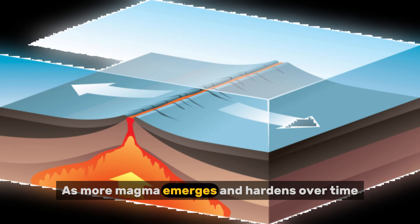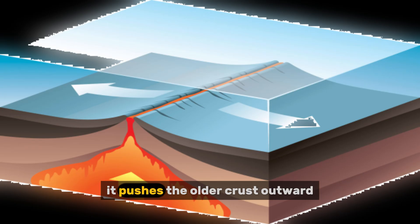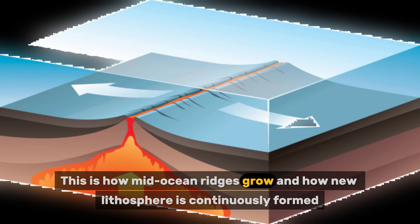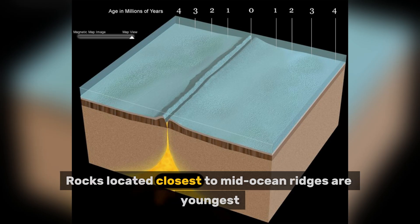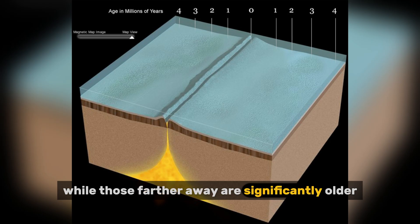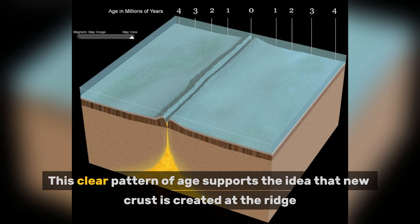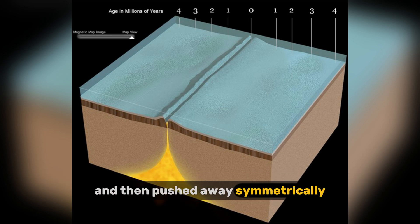As more magma emerges and hardens over time, it pushes the older crust outward, gradually widening the ocean floor. This is how mid-ocean ridges grow, and how new lithosphere is continuously formed. Geologists have confirmed this process by studying the age of oceanic rocks — rocks located closest to mid-ocean ridges are youngest, while those farther away are significantly older. This clear pattern of age supports the idea that new crust is created at the ridge and then pushed away symmetrically.